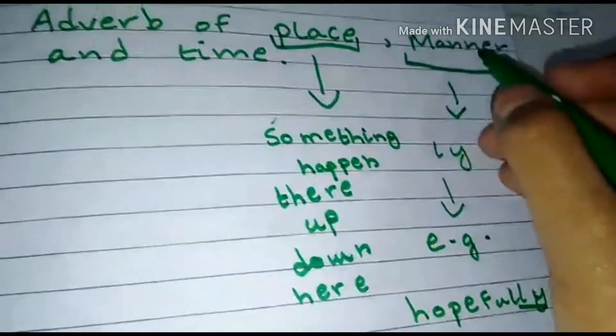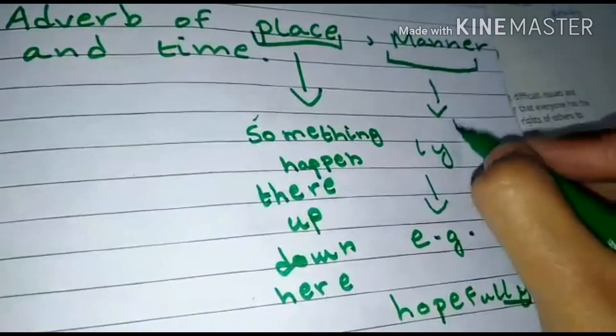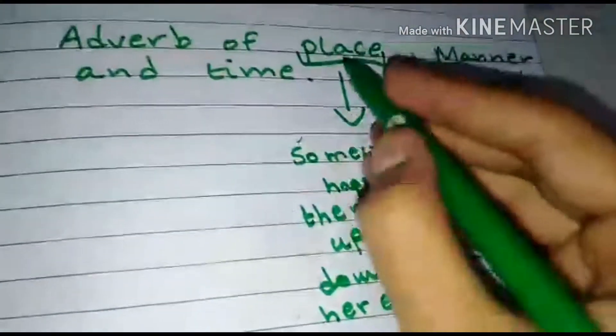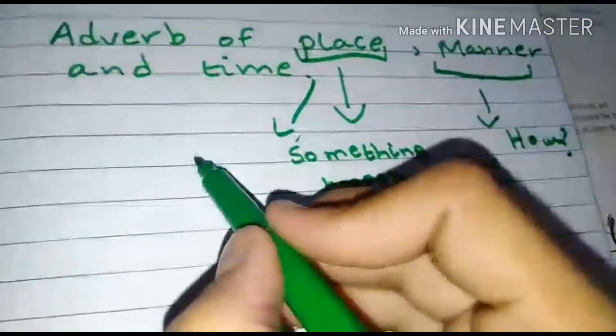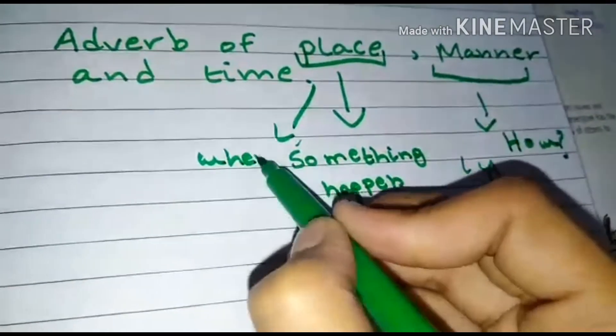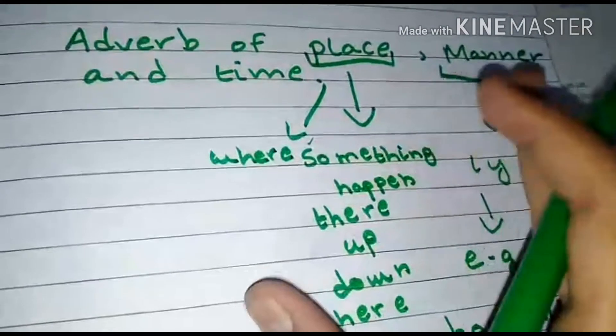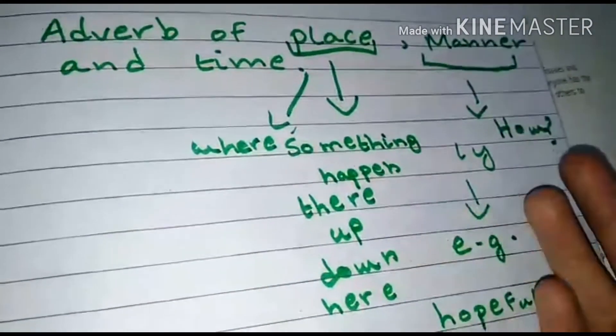So adverb of manner answer the question how, and adverb of place answer the question where. Like for example, where she was - she was up, she was down.